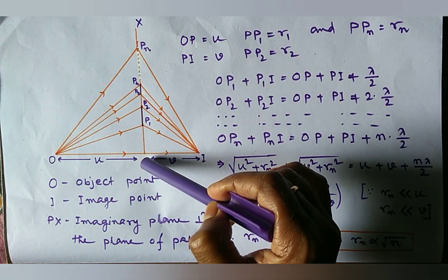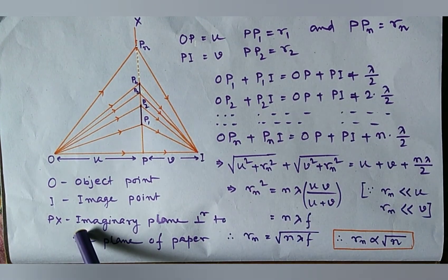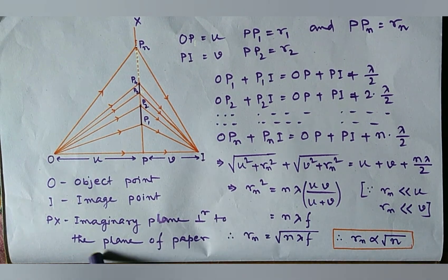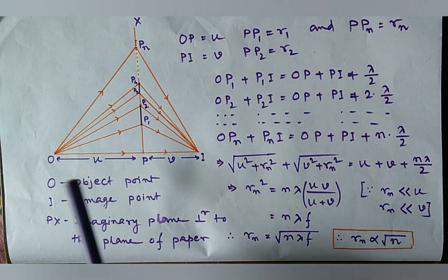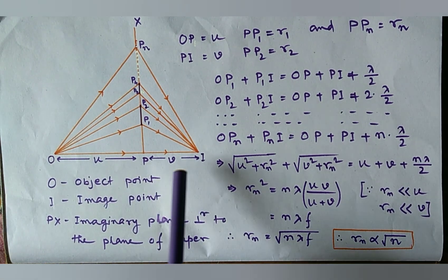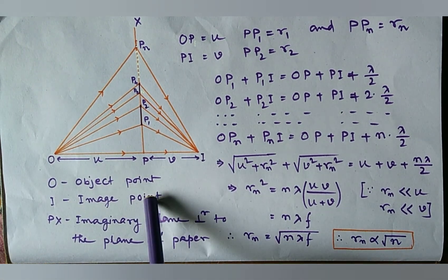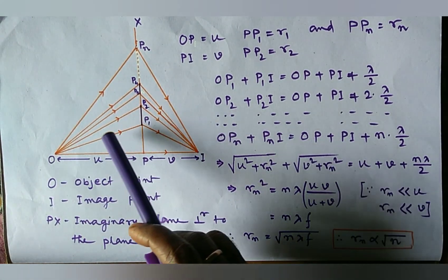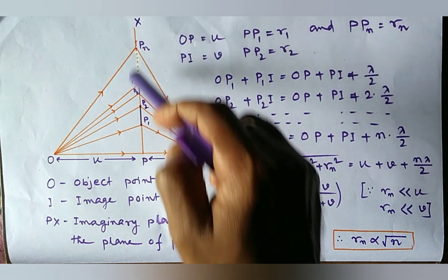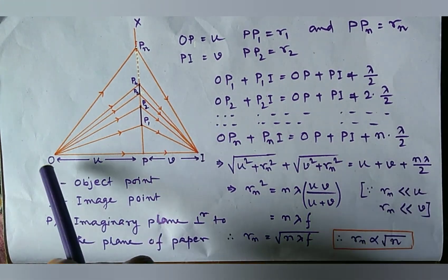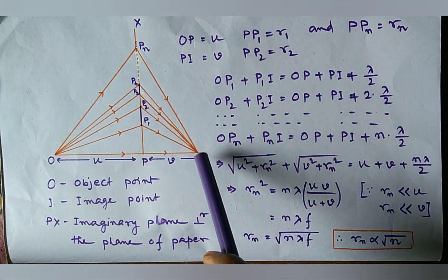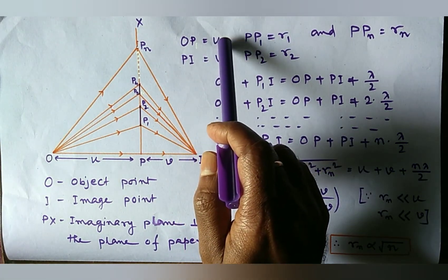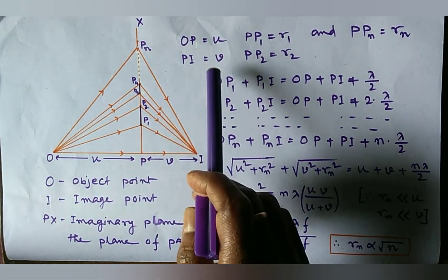Here, Px is an imaginary plane perpendicular to the plane of paper. O is object point and I is image point. Here, we take a monochromatic light which passes through the plane from O to I. We also take OP equal to U and PI equal to V. This is object distance and this is image distance.